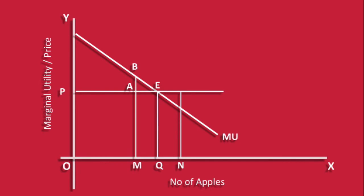If the consumer consumes more than the equilibrium quantity, say N number of apples, marginal utility is less than price. Marginal utility is Nf. Price is NC. He is a loser. Area ECF represents loss of utility. To avoid such loss, he can reduce his consumption.